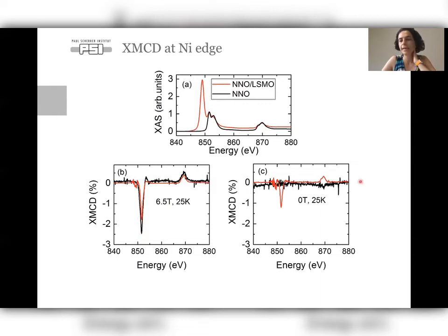But for the single layer at 0 Tesla, that goes away. So it's not remanent. So it means that there is some paramagnetic moments on the single layer of NNO, maybe on the surface. However, on the bilayer, we see that there is a clear remanence, showing that there is a ferromagnetism at the NNO when deposited on top of LSMO.